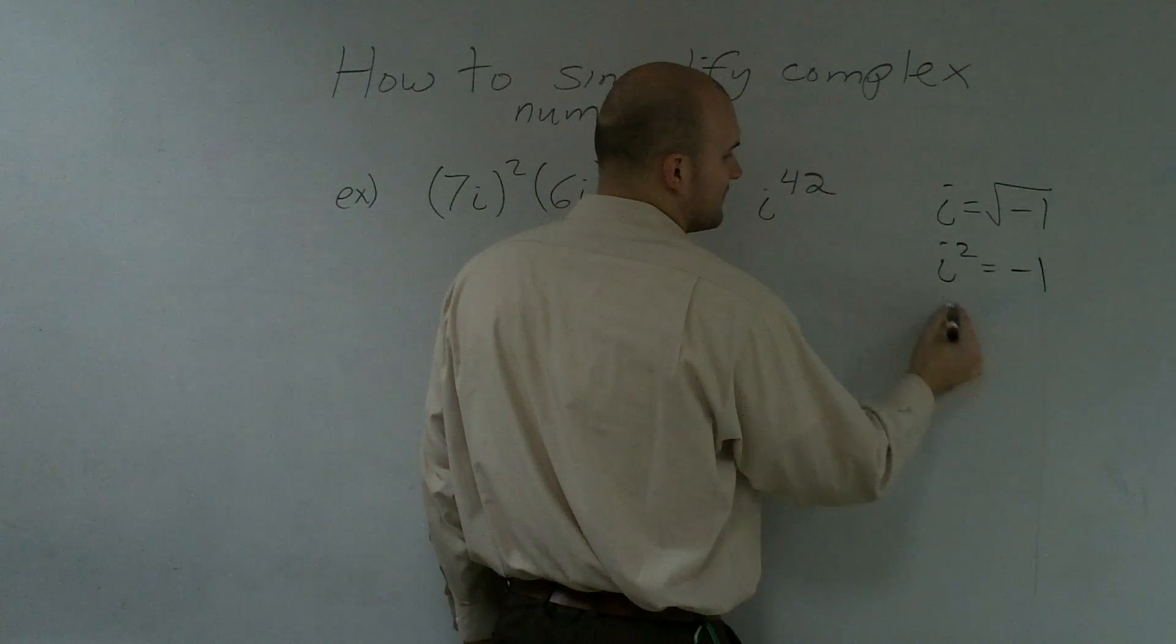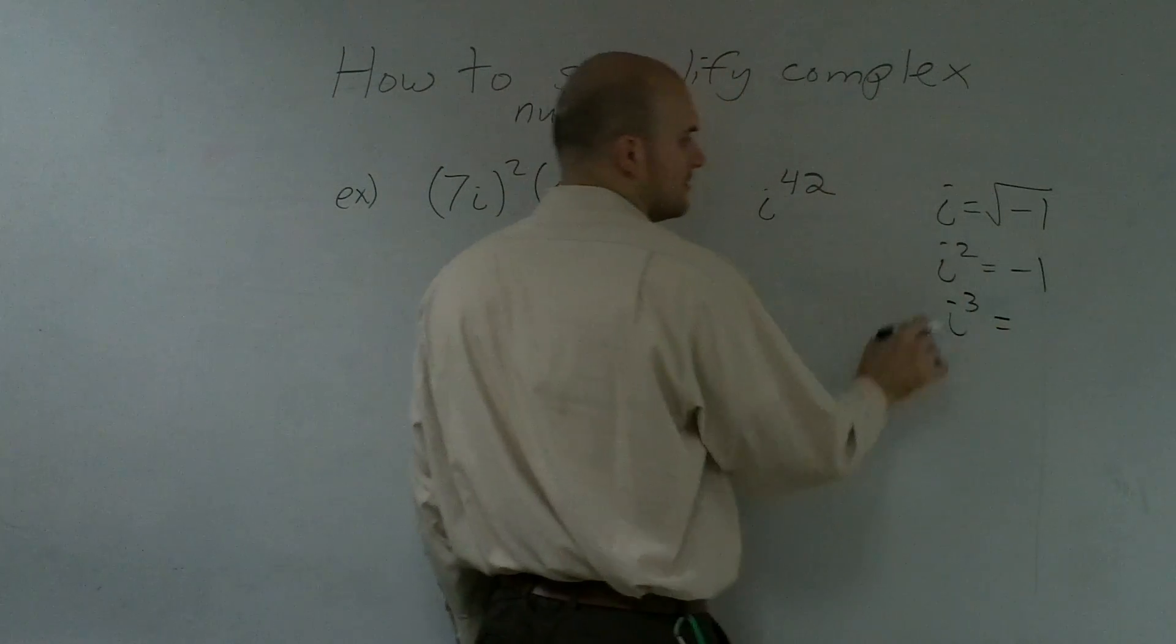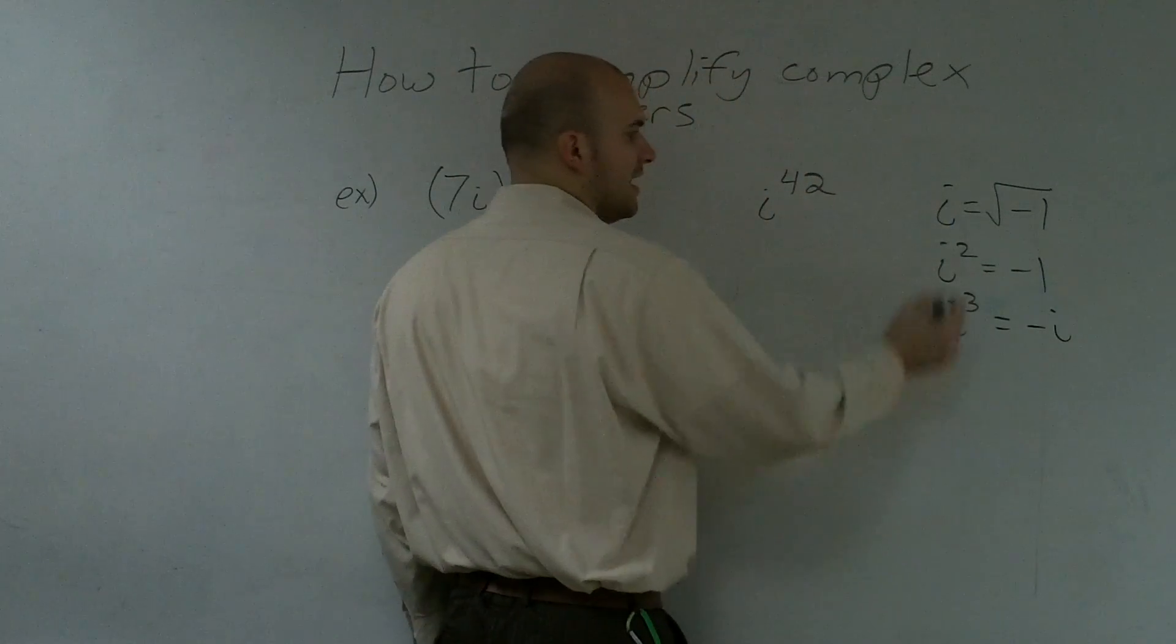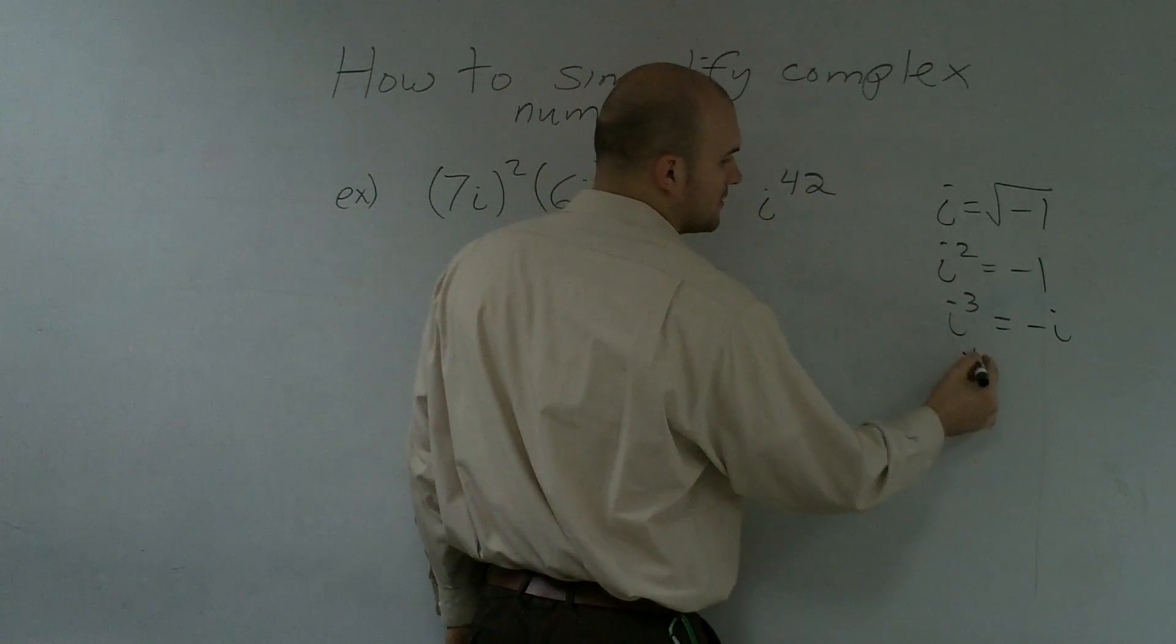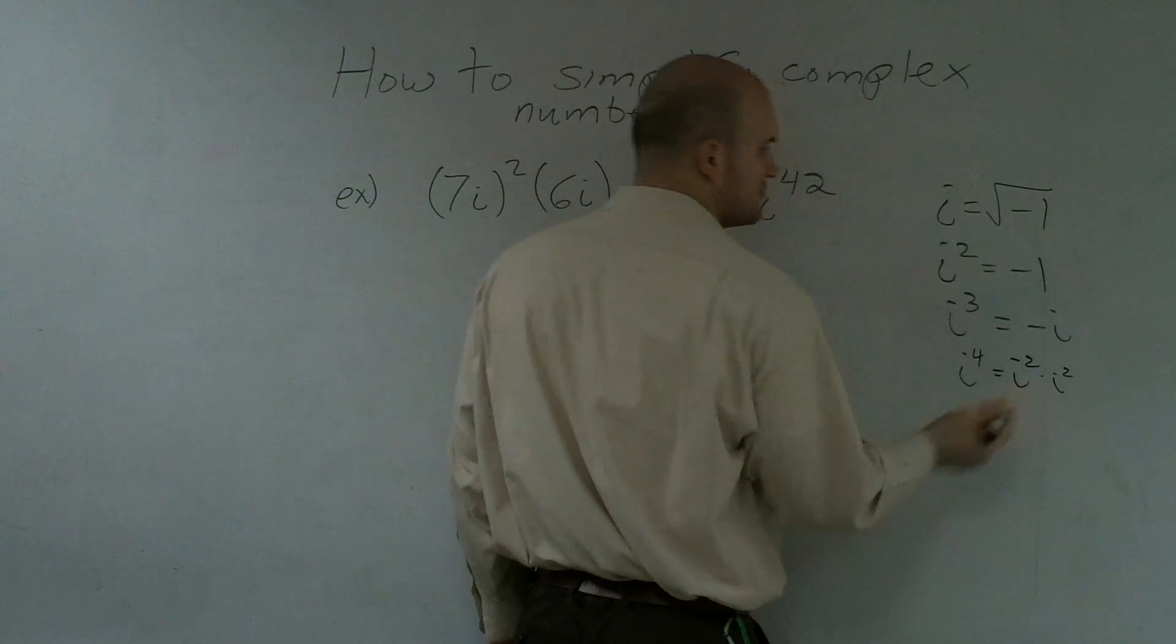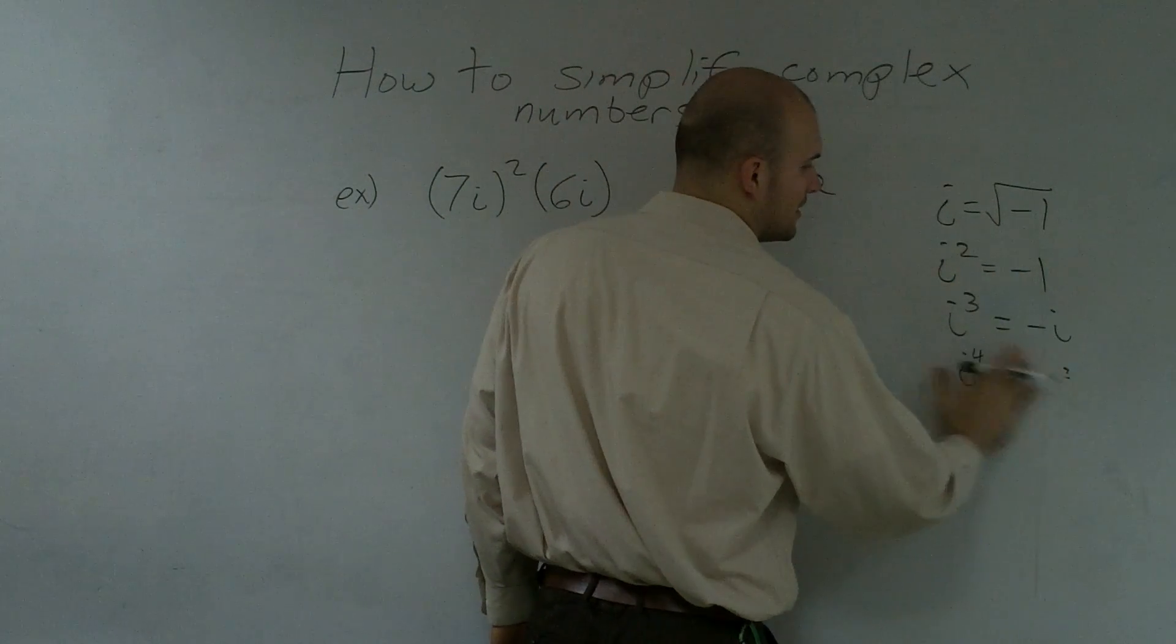And then if I wanted to find out what i cubed was, well, that would become i times i squared, which would become a negative i. And then if I did i to the fourth, that's essentially i squared times i squared, which would become negative 1 times negative 1, which is a positive 1.